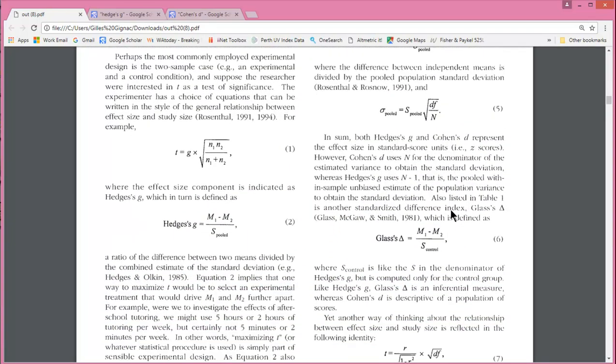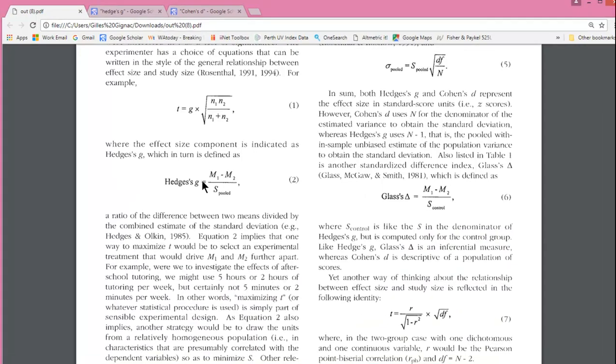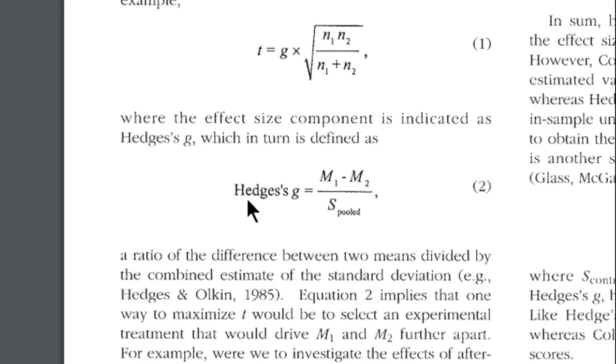I'll just point out the formulae that Rosnau and Rosenthal present. And we can see that Hedges' g is the difference between two means divided by a pooled standard deviation.